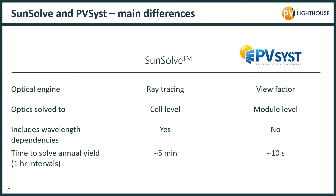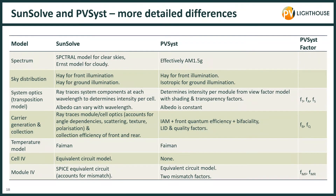We can determine those PVSYST bifacial inputs using SunSolve. SunSolve uses ray tracing rather than a view factor model. To assess the various losses, it uses inputs such as the torque tube diameter or its reflectance rather than a simple loss factor as in PVSYST. It solves the optics down to the cell level, which allows us to assess the cell-to-cell mismatch, and it also accounts for wavelength dependencies. This makes SunSolve more accurate but also slower — to solve an annual yield at one-hourly intervals currently takes about 5 minutes as opposed to 10 seconds. The slide gives more detail on the differences between the two programs.